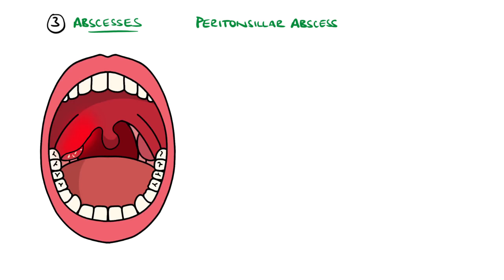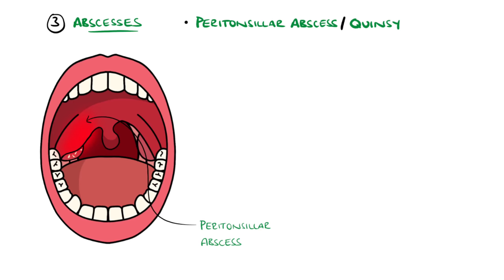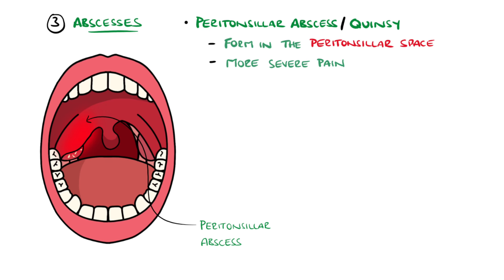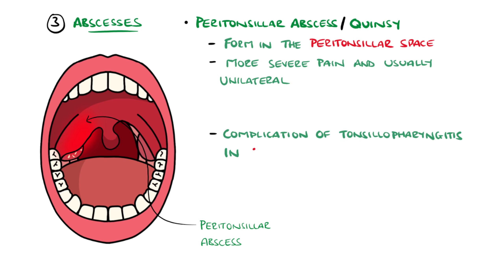Peritonsillar abscesses, also known as quinsy, are collections of pus that can also cause sore throat. These form between the tonsils and pharyngeal wall in a potential space called the peritonsillar space. They typically cause a more severe pain than in tonsillopharyngitis and are usually unilateral, and can be a complication of tonsillopharyngitis in around 2% of people within two months of infection.